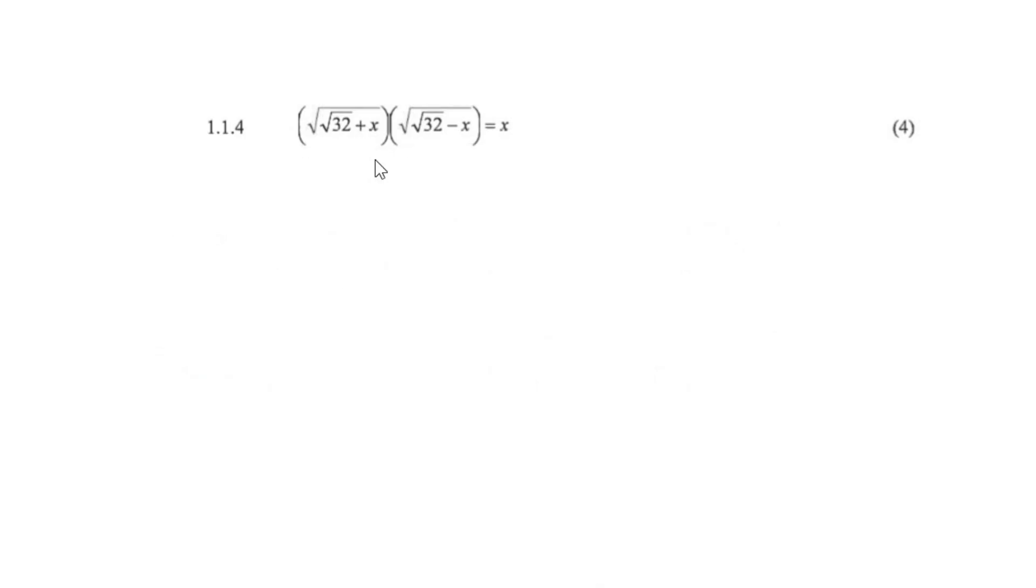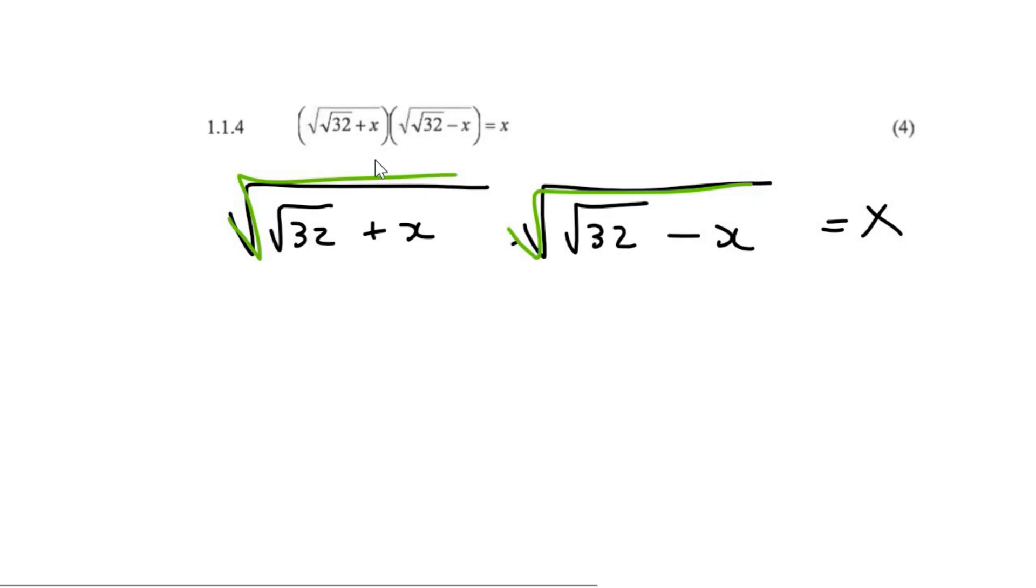And so if I multiply these two big square roots together, then the answer... Well, actually, let me just write this a little bit bigger. I want to make sure that you guys get this. What's going to happen is that this square root on the left and this square root on the right are going to multiply together and become one big square root.